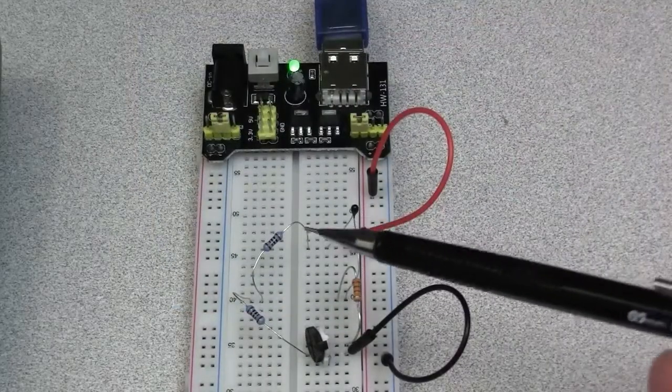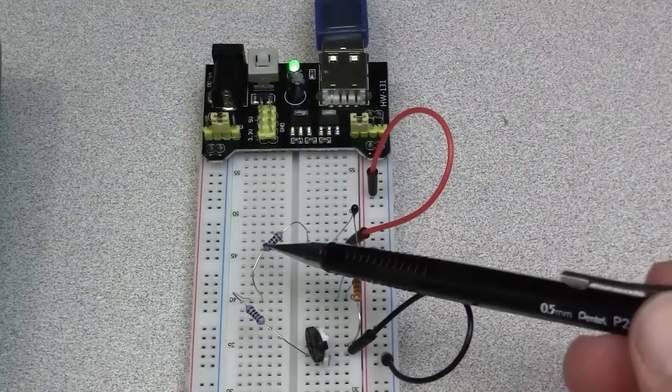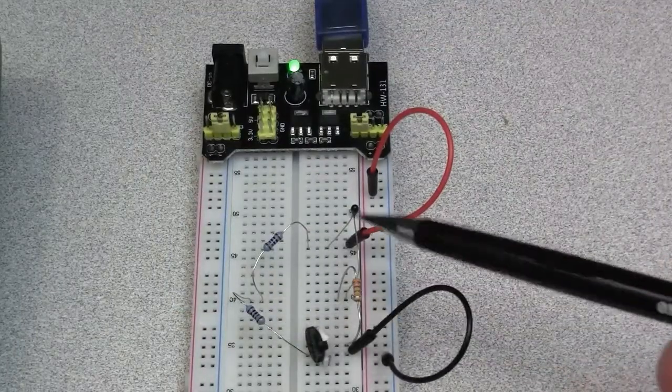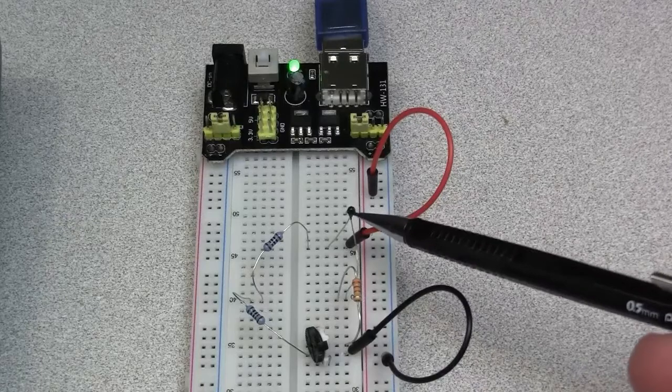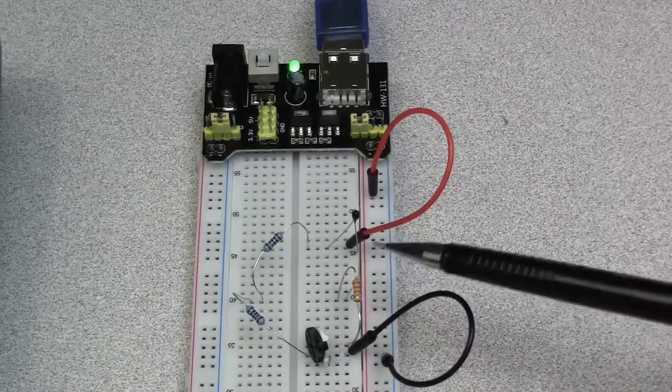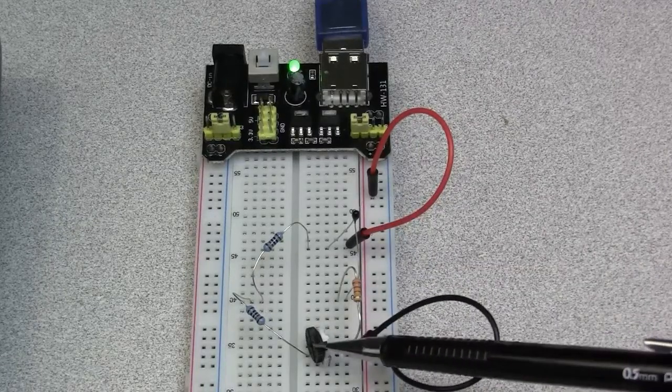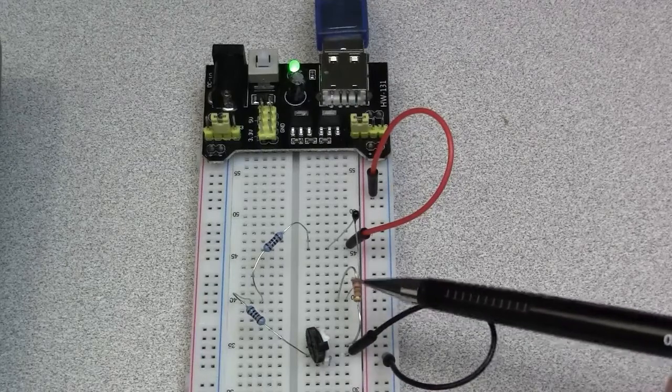This is my bridge circuit. The two fixed resistors are here and here. My thermistor is in this leg. I have a variable resistor consisting of a potentiometer and a fixed resistor in this leg.